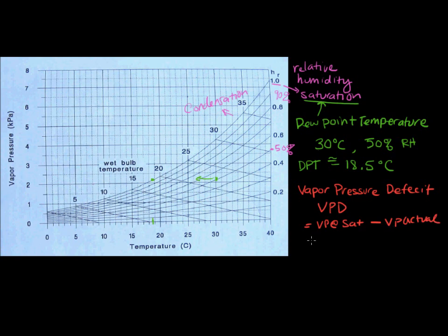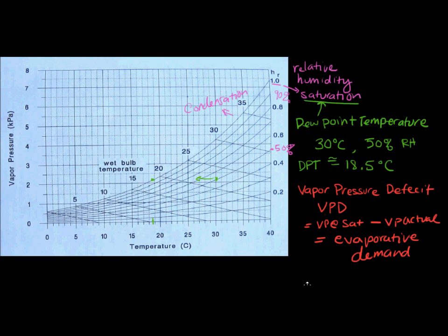The greater the vapor pressure deficit, the greater evaporation rates you'll have. If you have a high vapor pressure deficit, it's really going to drive evaporation because it's going to create a bigger gradient between saturation and the air. So for example, let's say we are given two situations: let's say I look at the Weather Channel, and in Arizona, where I am, it's 35 degrees C and 60% relative humidity, and then let's say in Florida it's 30 degrees C but 90% relative humidity. Which one has the greater vapor pressure deficit?